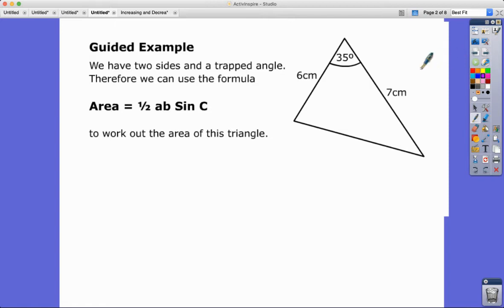Here's a guided example. We've got an angle, we've got two sides and their included angle—two sides and a trapped angle. Therefore we can use this formula to work out the area of the triangle. So it's really straightforward. We'll call this a, we'll call this b, here's angle C. This would have been side C but we're not using this. The area is equal to half times 6 times 7 times sine 35.